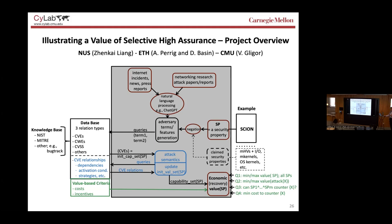That's how we determine the lower bound on the value of high assurance — selective high assurance. Are there any questions? Thank you very much.